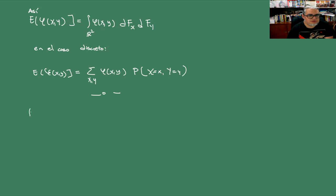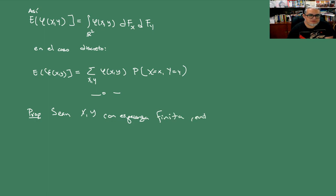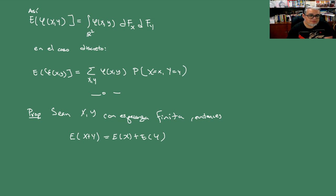Proposición: si tenemos dos variables aleatorias con esperanza finita, entonces la esperanza de la suma es la esperanza de X más la esperanza de Y.